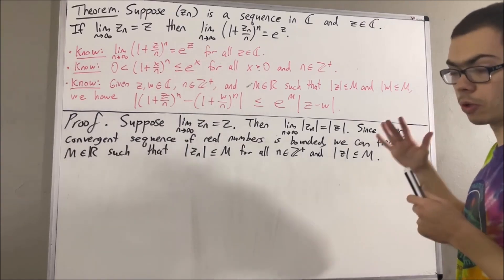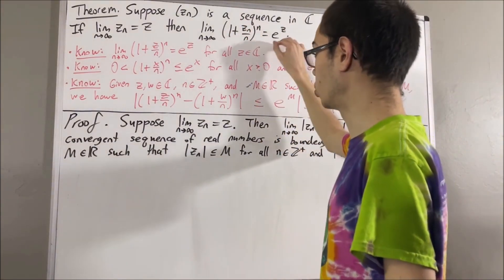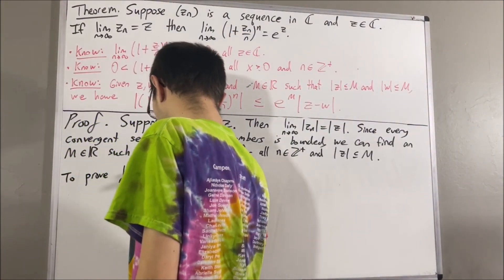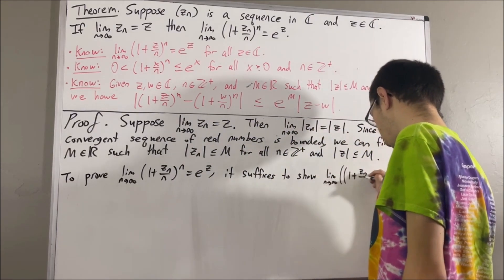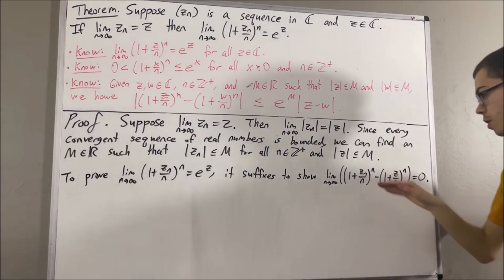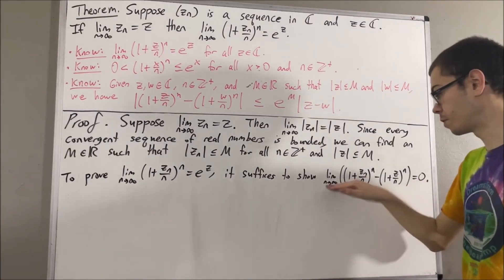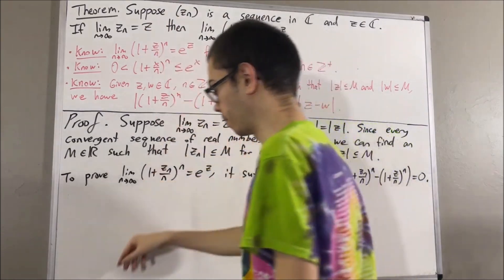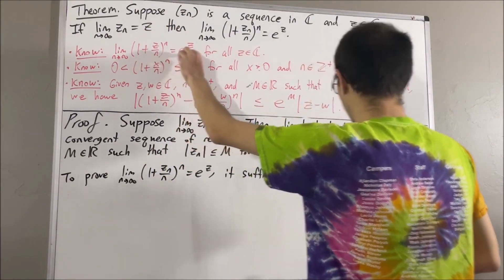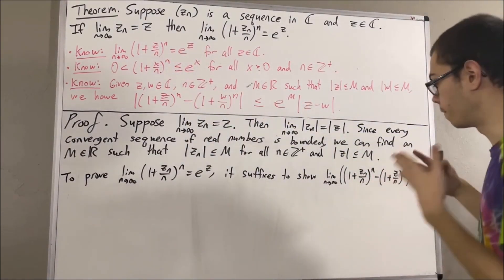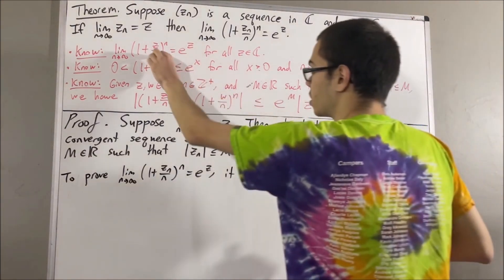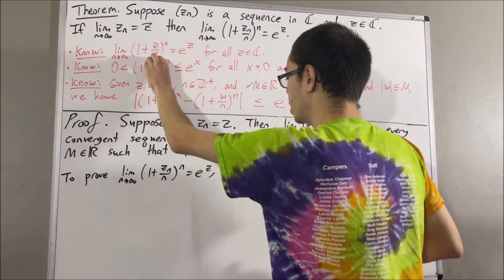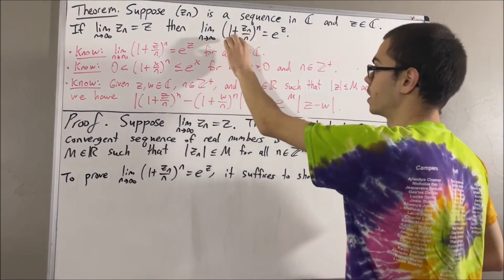Remember, the goal is to prove that the limit of the sequence 1 plus zn over n to the power of n equals e to the z. To prove this, it suffices to show that the limit of the sequence 1 plus zn over n to the power of n minus e to the z is equal to zero. The reason is that from our first fact, the limit of 1 plus z over n to the power of n equals e to the z. Applying the addition property of limits, the sum of these two sequences converges to e to the z plus zero, which equals e to the z. But the sum of those two sequences is precisely our target sequence.